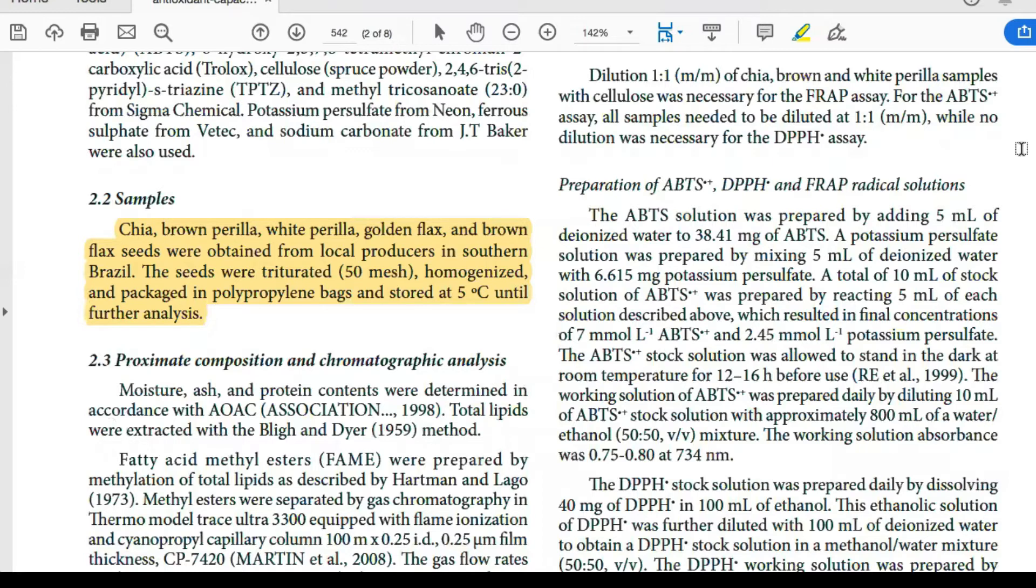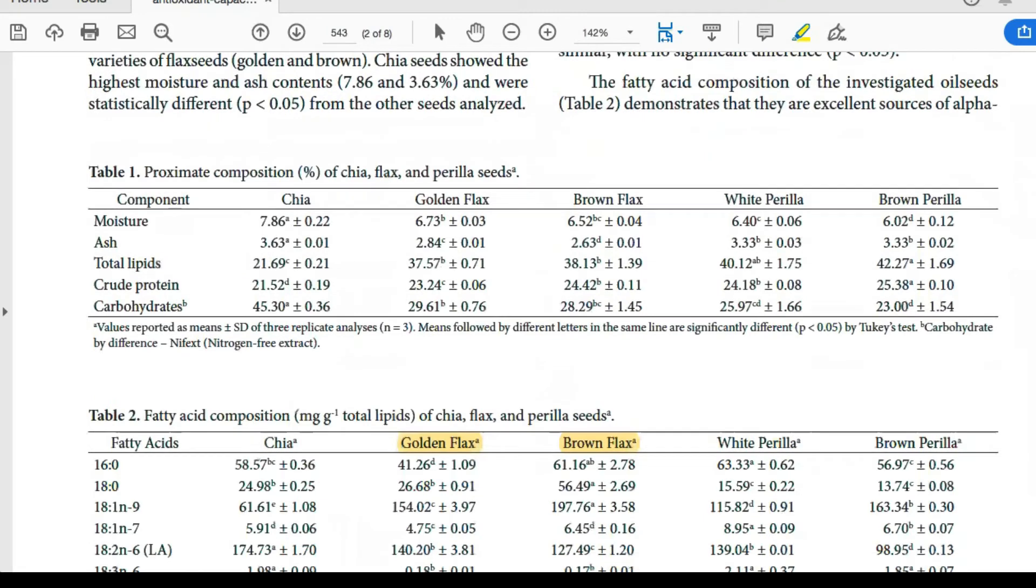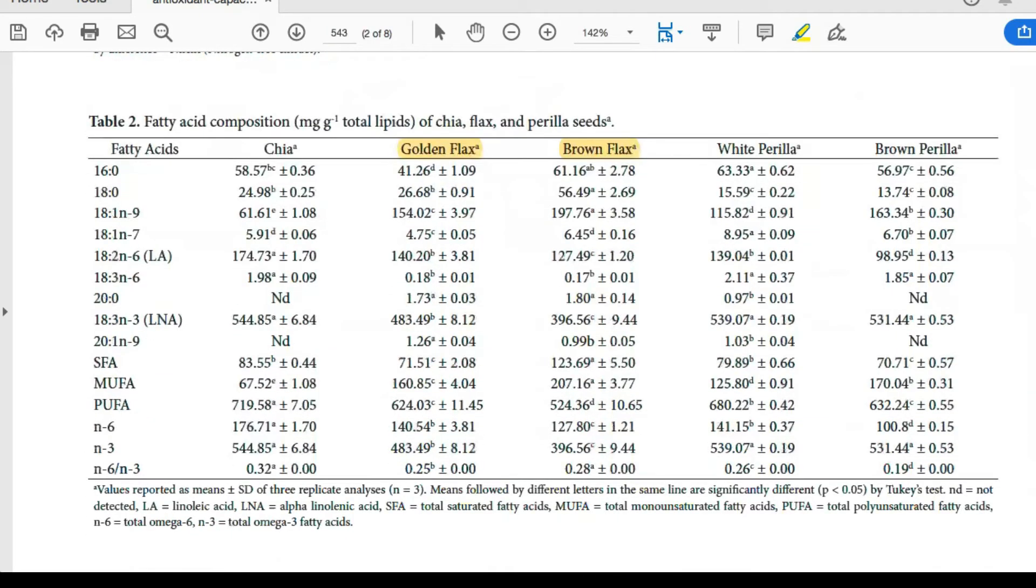In this study, they took samples of five different seeds including golden flax and brown flax seeds which were obtained from local producers in southern Brazil. They analysed the composition of these five different seeds to find the fatty acid composition as well as the antioxidant capacity.